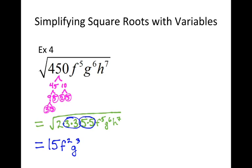And then the H's. H has an odd exponent, so we're going to have one left over, which means we're pairing 6 of those H's up and getting how many pairs? 3.